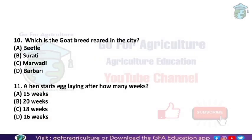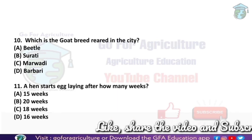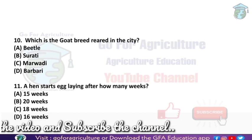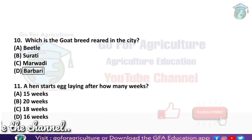Next: which goat breed is reared in cities? Basically, in cities the Barbari breed of goat is used. The Barbari breed is mostly reared in India and Pakistan. In India, it is mostly reared in Haryana, Punjab, UP, etc. So the answer is Barbari.